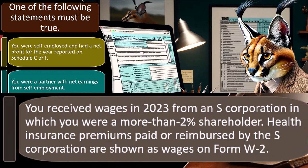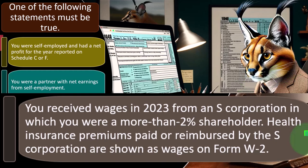Or you received wages in 2023 from an S corporation in which you were a more than 2% shareholder. The S corporation adds another complication because these are pass-through entities — typically trying to get the best of both worlds, having the separation of a separate legal entity possibly for litigation purposes, and also benefits with regard to payroll tax calculations, while still being a flow-through entity that flows through to the individual tax return.